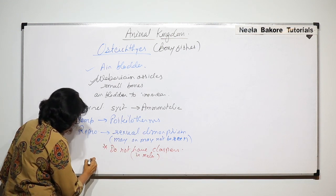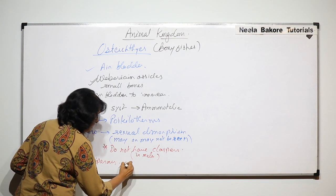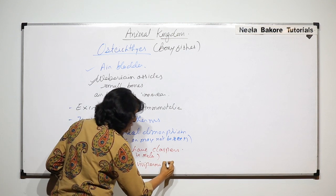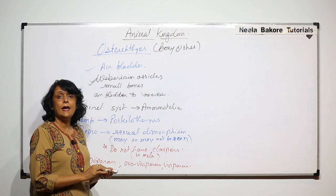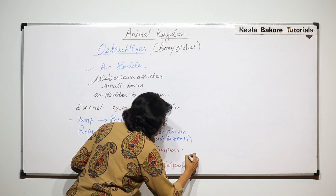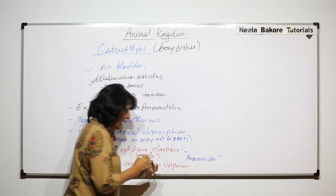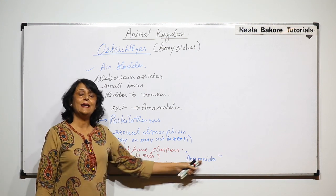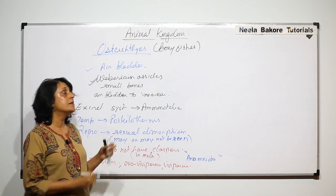Bony fishes can be oviparous. Most of them are oviparous, some can be ovoviviparous, and very few are viviparous. Regardless of their reproductive type, they are all anamniota — meaning the extra-embryonic membrane, the amnion, is absent, and that is why we call them anamniota.